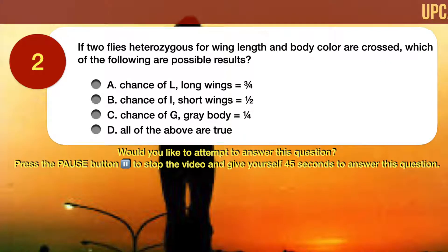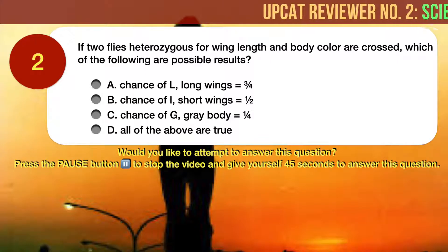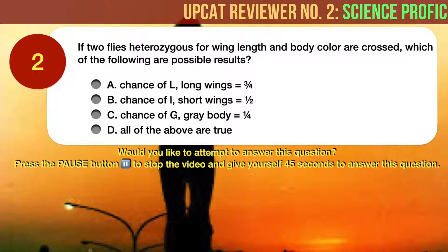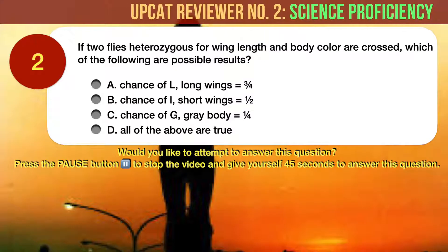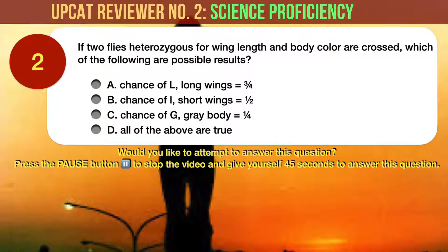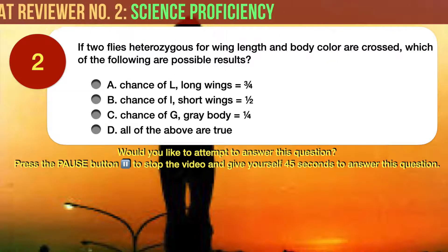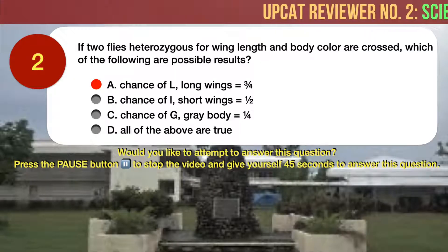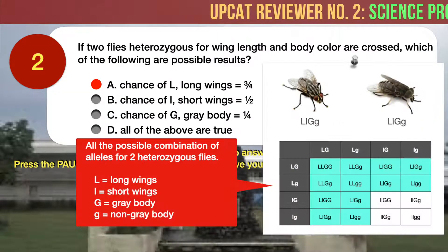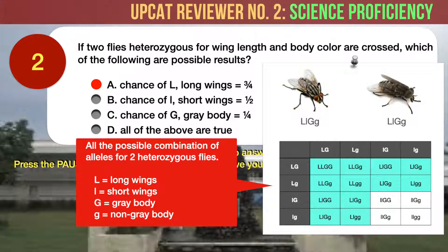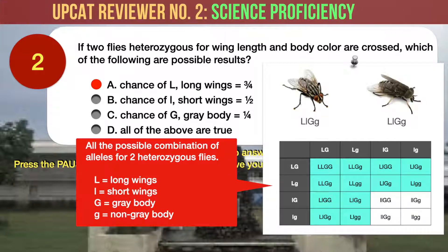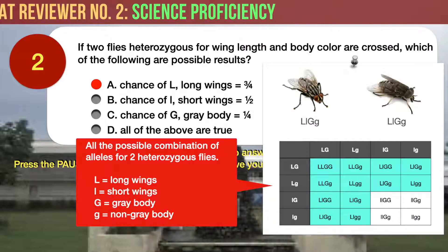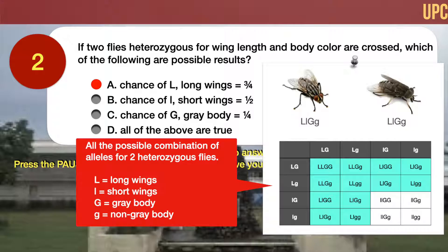Question number 2. If two flies heterozygous for wing length and body color are crossed, which of the following are possible results? A, chance of long wings is three-fourths. B, chance of short wings is one-half. C, chance of gray body is one-fourth. D, all of the above are true. The correct answer is A: the chance of long wings is three-fourths. This is a question on genetics. For two heterozygous flies, all the possible combinations of alleles are shown in the table. As you can see, there are three-fourths, or 75%, chance of long wings.